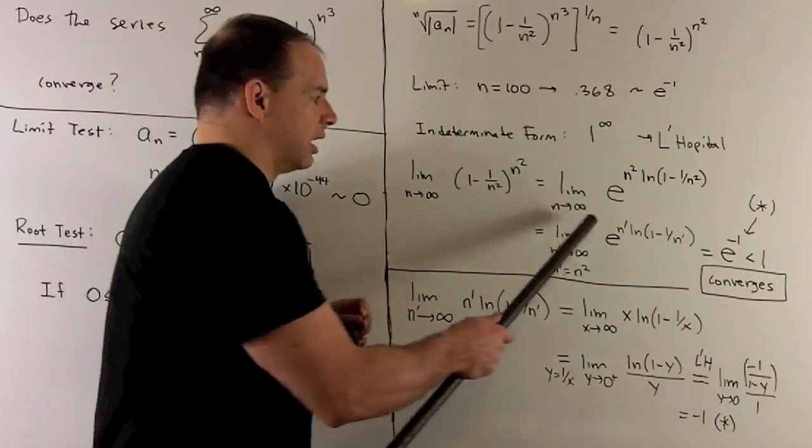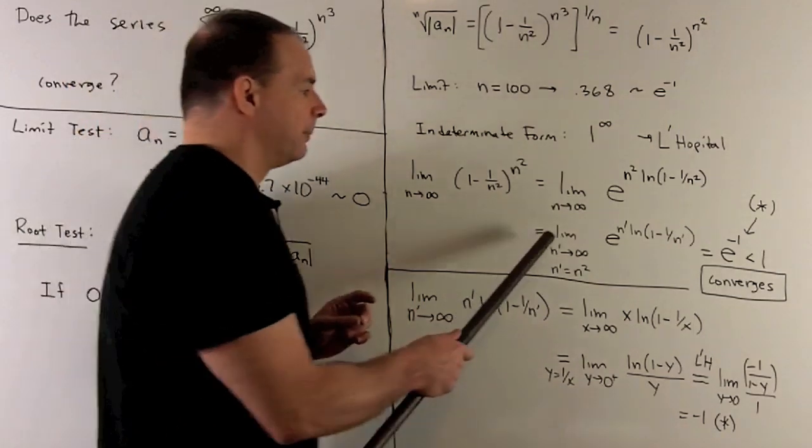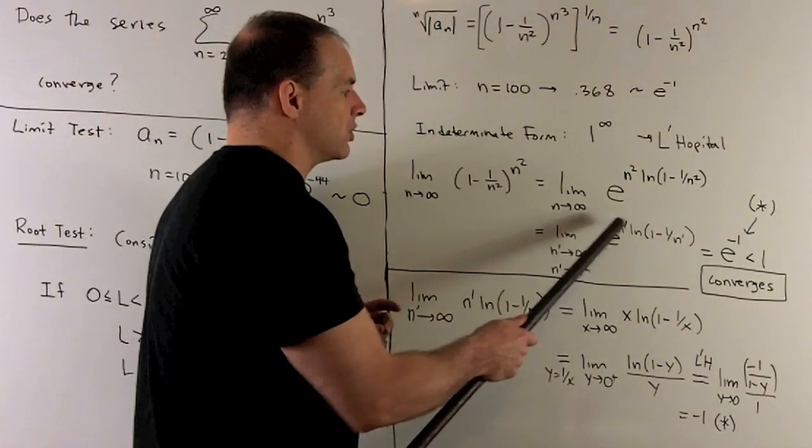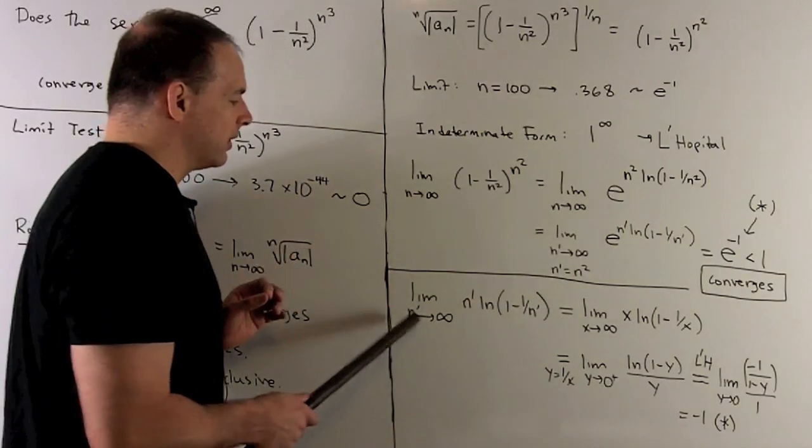Now let's take a look at this limit here. Since e to the x is continuous, we could take this limit, just push it into the exponent. So we don't have to worry about the e for now. We're looking at this here.